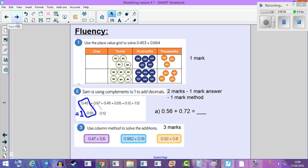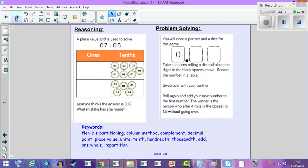Next, we have reasoning and problem solving. A place value grid is used to solve 0.7 add 0.5, but Jasmine thinks the answer is 0.12. What mistake has she made? And make sure you're using a reasoning bubble to explain thoroughly what mistakes you might have made, what patterns you have noticed.